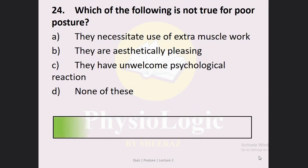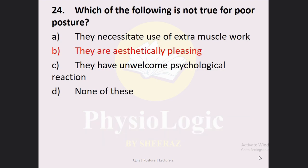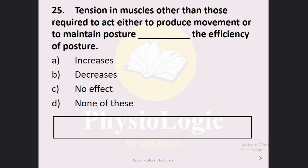Next MCQ: Which of the following is NOT true for poor posture? Option A: they necessitate the use of extra muscle work. Option B: they are aesthetically pleasing. Option C: they have unwelcome psychological reaction. Option D: none of these. The correct option is Option B — they are aesthetically pleasing. Poor posture causes extra muscle work and has unwelcome psychological reactions, but poor posture is NOT aesthetically pleasing — it is aesthetically displeasing.